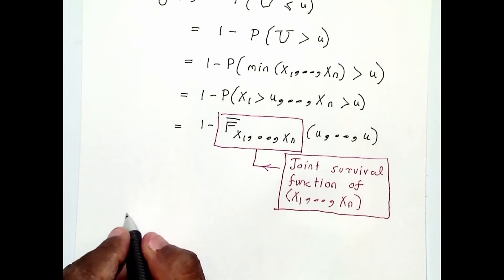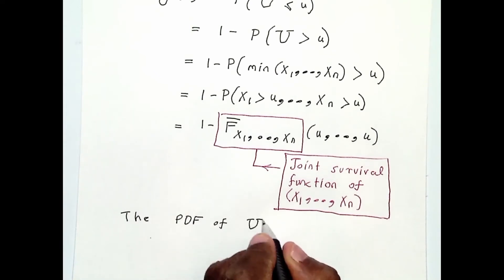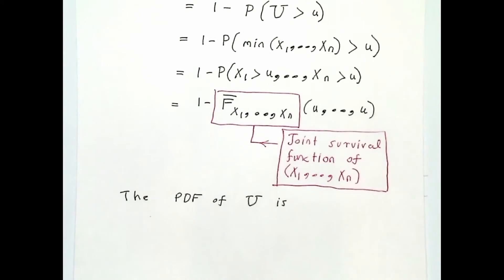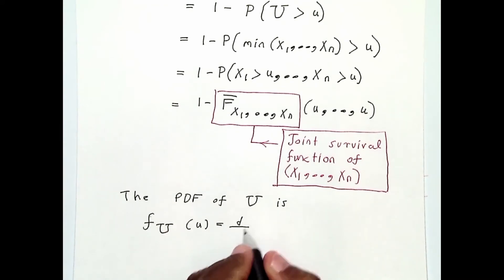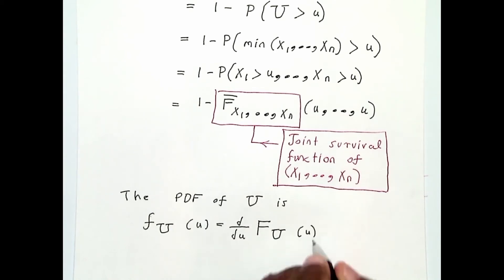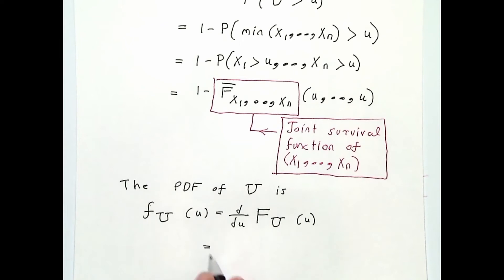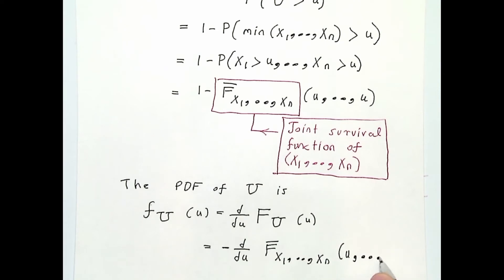The PDF of U is simply the derivative of the CDF, so it becomes minus d/du of the joint survival function. That completes variable B.